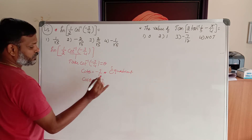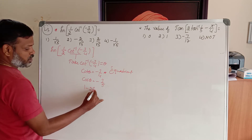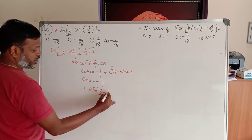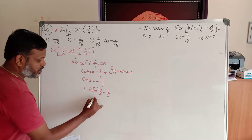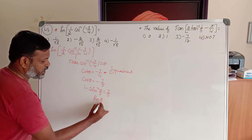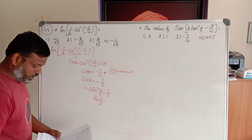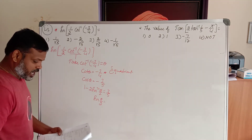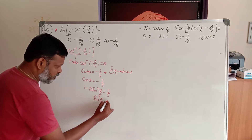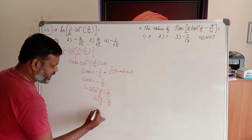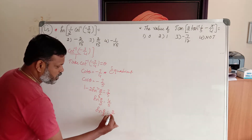Thus cos theta becomes minus 3 by 5. Now this cos theta can be written as 1 minus 2 sine square (theta by 2), and that is equal to minus 3 by 5. So from here, by extracting the value of sine (theta by 2), we get: minus 3 by 5 equals 1 minus 2 sine squared (theta by 2). Then the value of sine squared (theta by 2) becomes 4 by 5. Taking the square root, sine (theta by 2) becomes 2 by root 5.